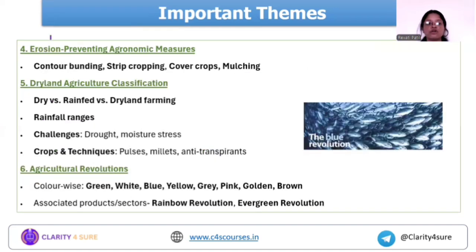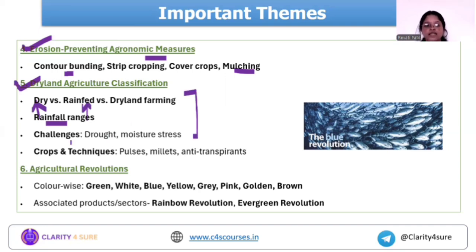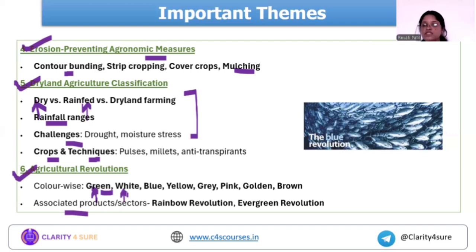The next important theme is erosion-preventing agronomic measures — contour bunding, strip cropping, mulching, etc. The question on the objective of mulching shows they want conceptual understanding. Next is dryland agriculture — if you go through the mains 2024 paper, there was a descriptive question: 'Write short note on dryland agriculture.' Along with the rainfall ranges for each classification — dryland, semi-dry, dryland — you need to have understanding of the challenges, different crops, and techniques used to achieve good yield in drought conditions. Next is agriculture revolutions. There are different revolutions and you need to focus on the associated product — like green revolution — which product, which personality is associated with which revolution.